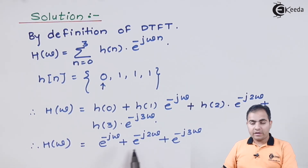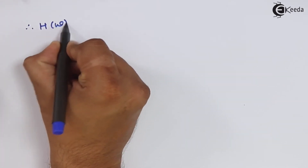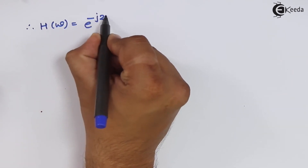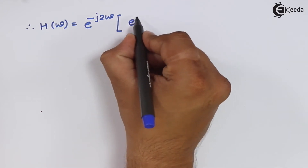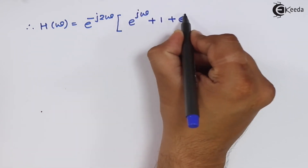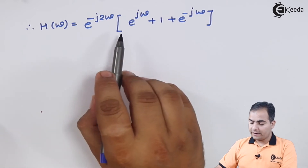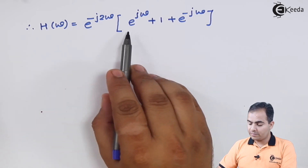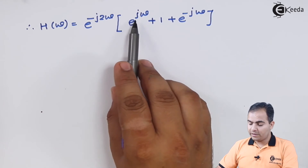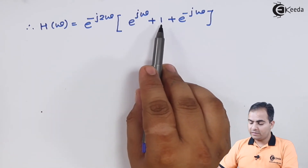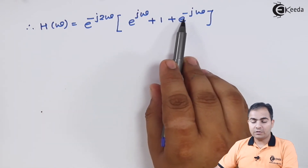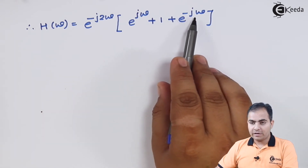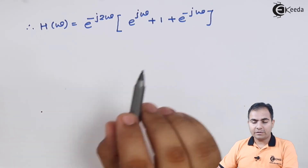From this equation I am going to take e to the power minus j2ω as a common factor. If I factor that out, the first term becomes e to the power plus jω, the second term is 1, and the last term was e to the power minus j3ω, from which factoring out e to the power minus j2ω gives e to the power minus jω. So I have this equation.